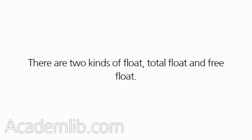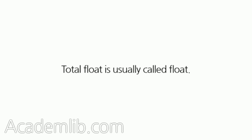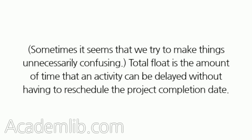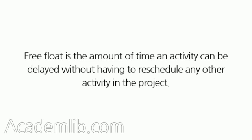There are two kinds of float: total float and free float. Total float is usually called float. Total float is the amount of time that an activity can be delayed without having to reschedule the project completion date. Free float is the amount of time an activity can be delayed without having to reschedule any other activity in the project.